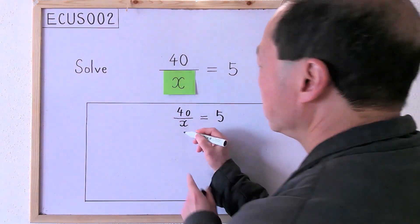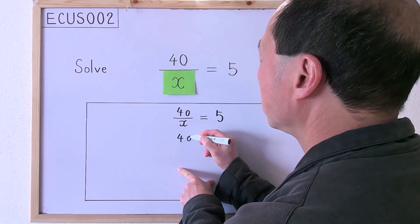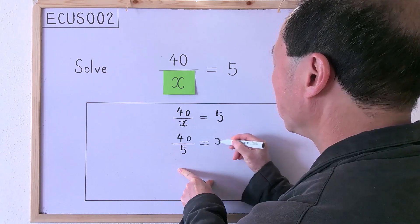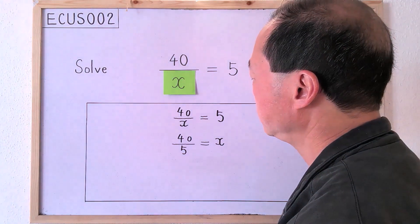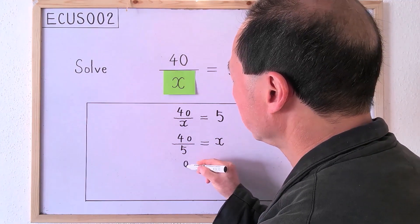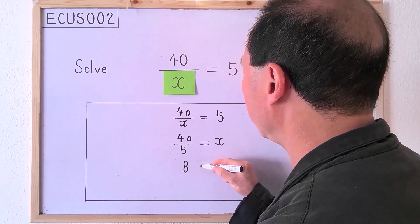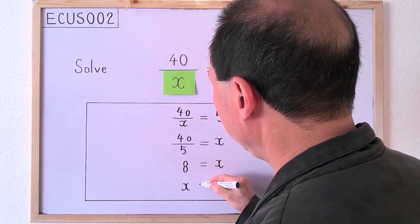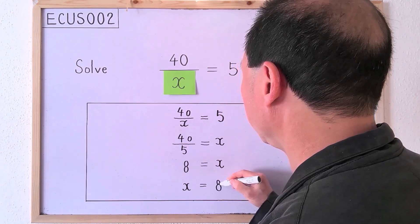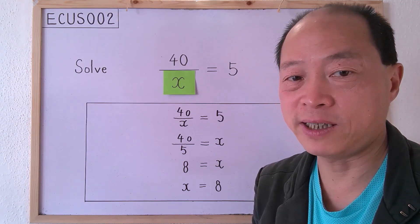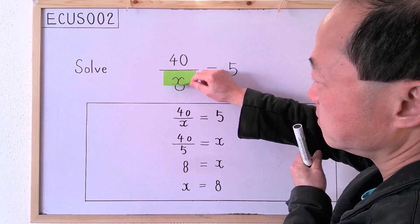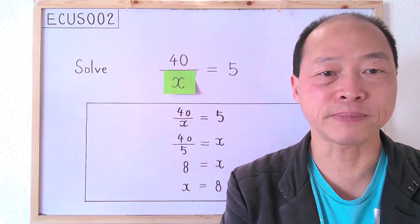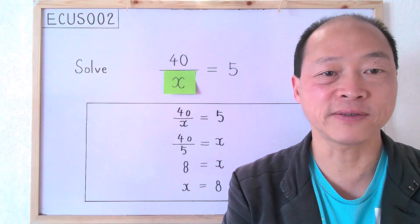Therefore, we can write the working steps as follows. 40 divided by 5 is 8. The third line becomes 8 equals x. Lastly, we write x equals 8. Let's see if the answer is really 8. Personally, I call this method the factor pair method, because I use a factor to find the other factor in the pair. Which method do you like more — the factor selection method or the factor pair method?